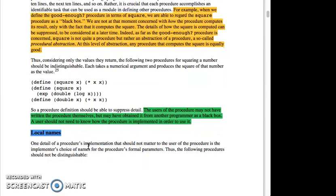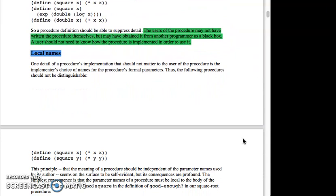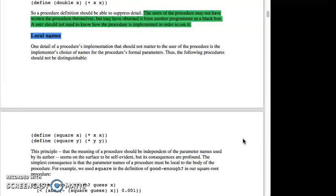A procedure definition should be able to suppress details. The users of the procedure may not have written the procedure themselves, but may have obtained it from another programmer as a black box. A user should not need to know how the procedure is implemented in order to use it. Local names. One detail of a procedure's implementation that should not matter to the user of the procedure is the implementer's choice of names for the procedure's formal parameters. Thus, the following procedures should not be distinguishable: define the square of x to be x times x, or define the square of y to be y times y.